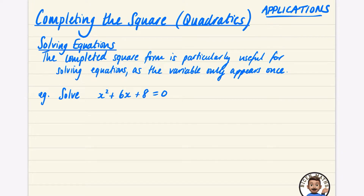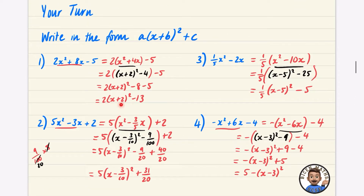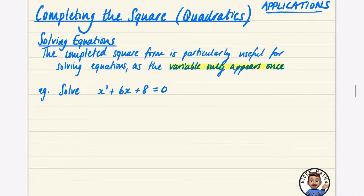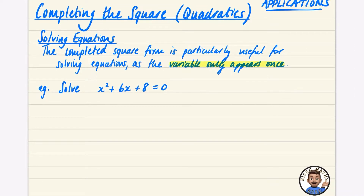One of the most important things we can do with completed square form is to solve equations. The completed square form is particularly useful for solving equations because the variable only appears once. When you're solving an equation you're trying to get x by itself, and in completed square form you can do that because there's only one x — which means you can manipulate the equation in a much more simplistic way that doesn't require any factorizing.